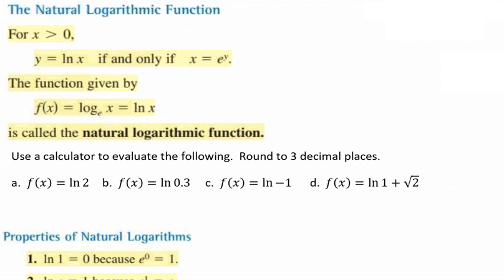In this video, we're going to be talking about the natural logarithmic function. For all x greater than 0, y equals the natural log of x if and only if x equals e raised to the y. The function is given by f(x) = log base e of x, which is our natural log of x. When we have a base of e, this gives us a natural log that we rewrite as ln. It's called the natural logarithmic function.